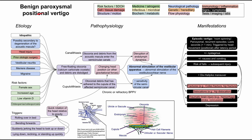This is a mechanism of disease map for benign paroxysmal positional vertigo, also called BPPV. BPPV is the most common cause of peripheral vertigo, and we'll be talking about its etiology, pathophysiology, and manifestations. Each box in this flowchart is color-coded according to the legend in the top right, and we'll be clearing each box and arrow and talking about them as we repopulate the entire flowchart.